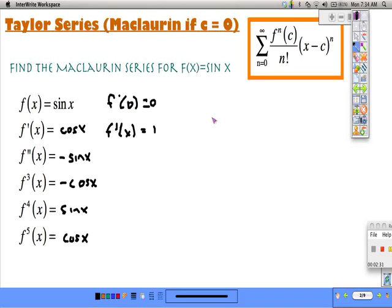What we end up with is that this series for sine of x equals x minus x cubed over 3 factorial plus x to the 5th over 5 factorial, and then the pattern continues to x to the 7th over 7 factorial, and so on.